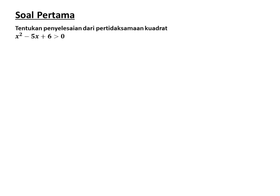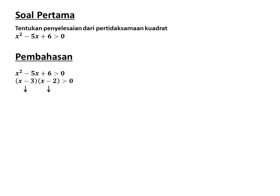Soal pertama: tentukan himpunan penyelesaian dari pertidaksamaan kuadrat x² - 5x + 6 > 0. Ruas kanan sudah bernilai 0 dan koefisien x² sudah positif, sehingga kita langsung memfaktorkan ruas kiri. X² - 5x + 6 difaktorkan menghasilkan (x - 3)(x - 2). Berarti akar-akarnya adalah x = 3 dan x = 2.